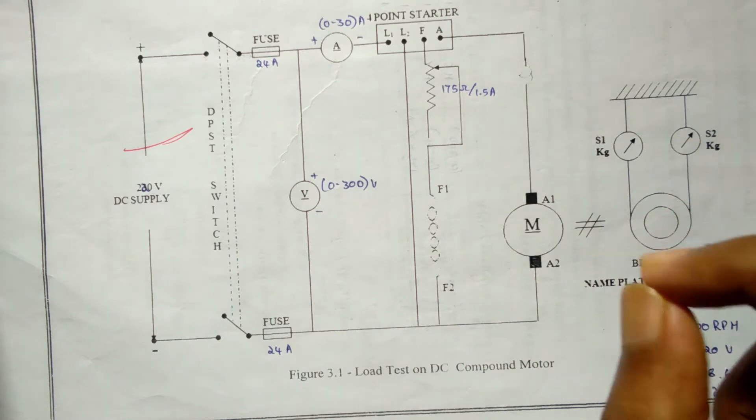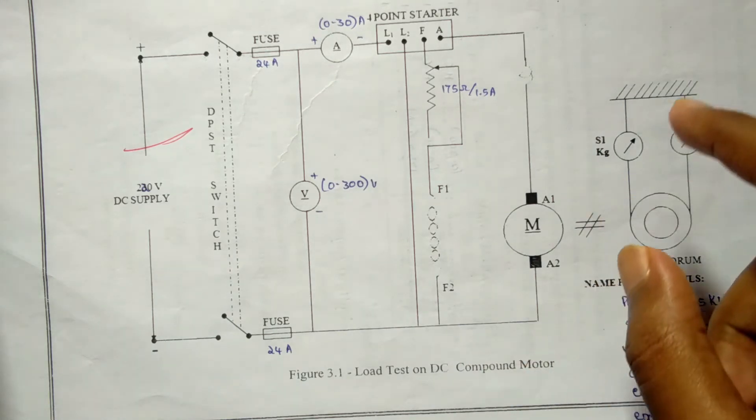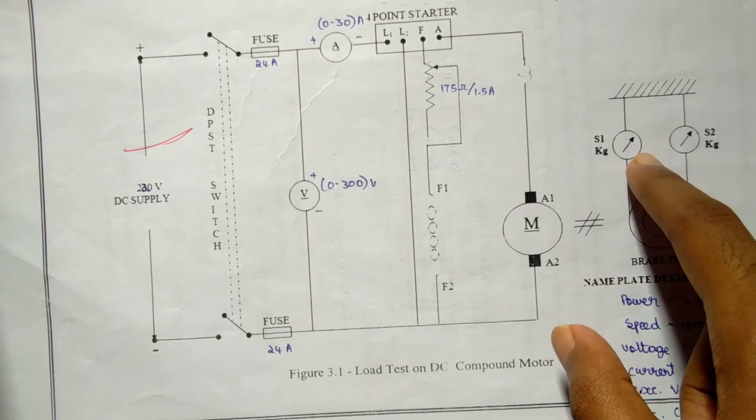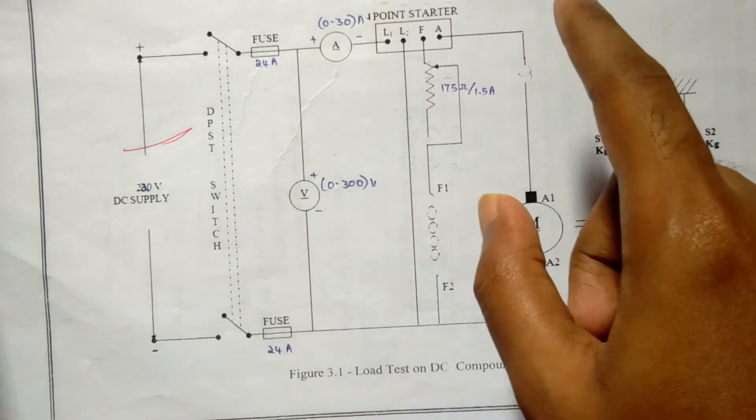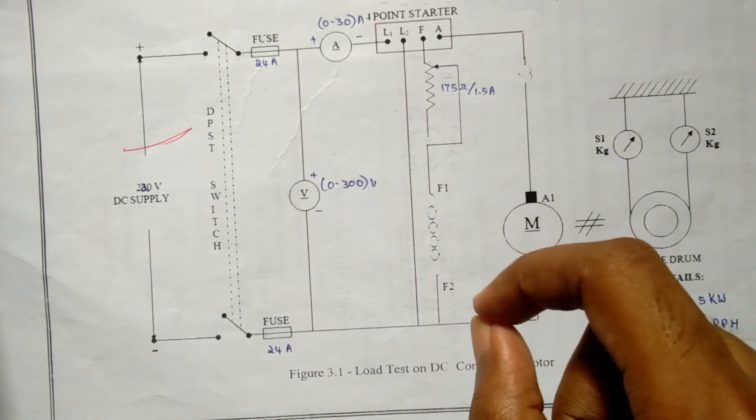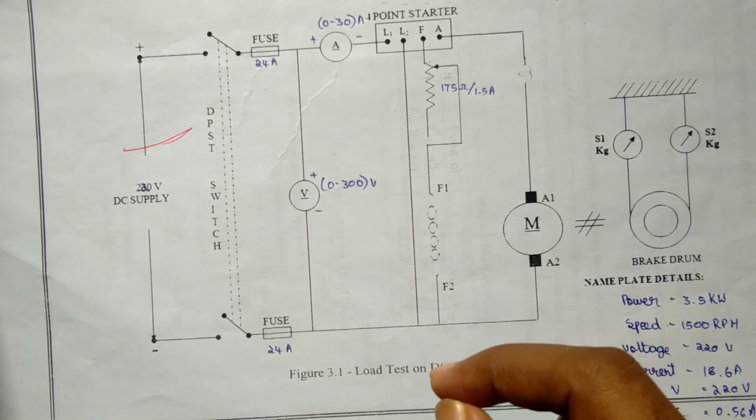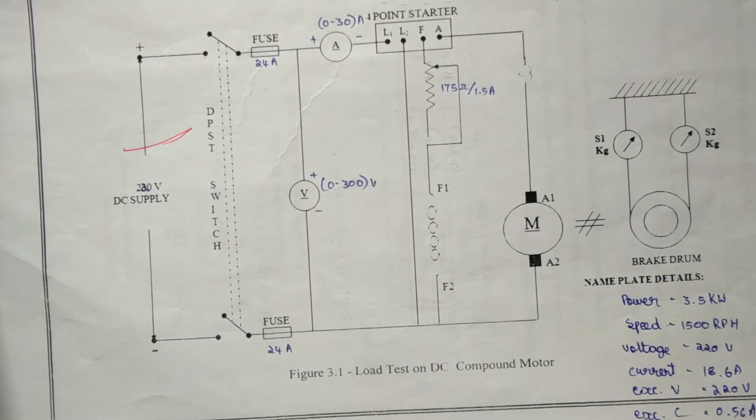The load is increased and the voltmeter, ammeter, and spring balance readings are noted down for various loads up to the rated current.